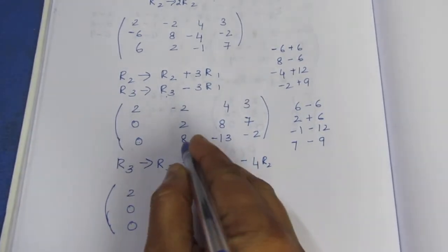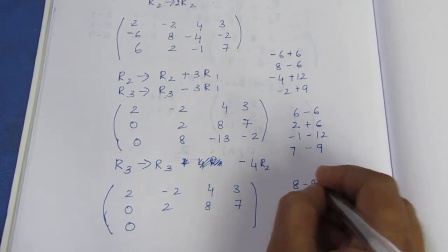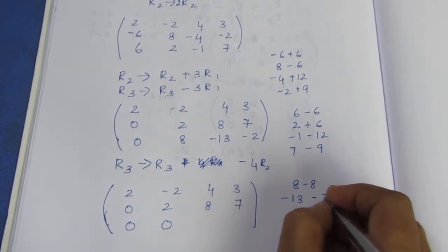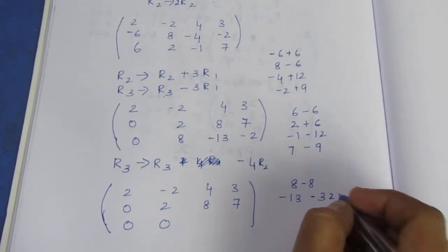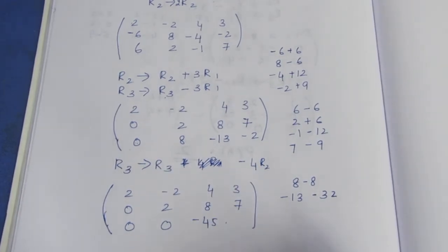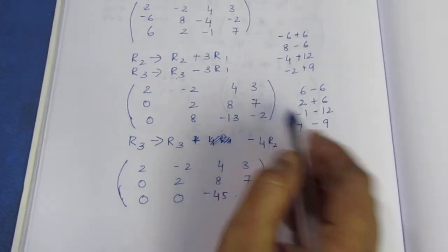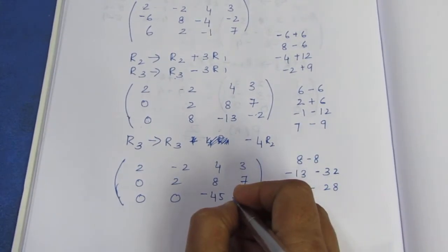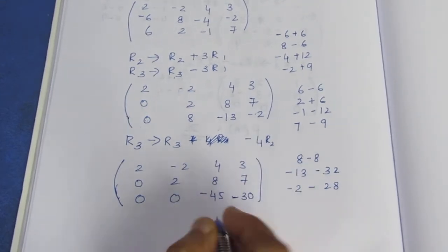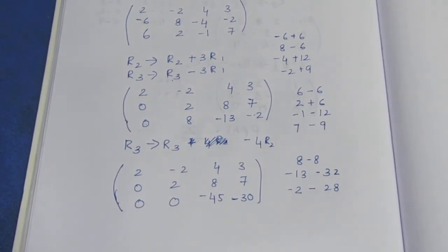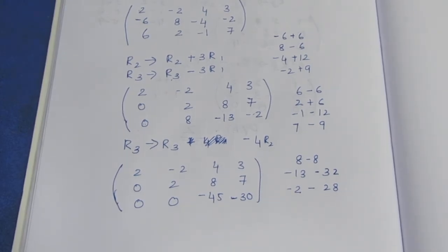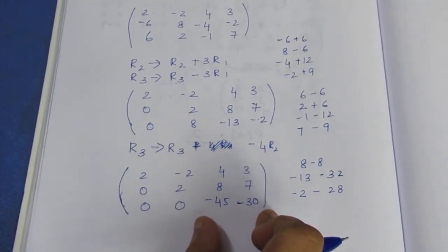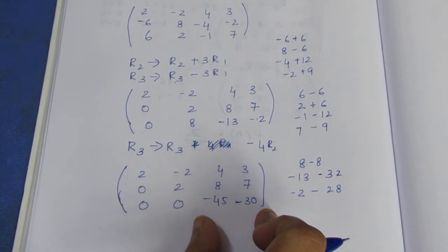So this is 0. 8 into 8 minus 4 — 2 is 8. Now it is 0. Minus 13 minus 8 — 4 is 32. This is minus 45. Minus 2 is minus 2, minus 7 — 4 is 28. So this is minus 30. Now I will change the number — divide by minus 15.